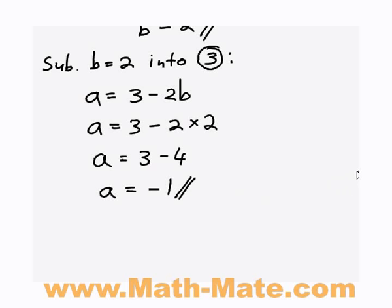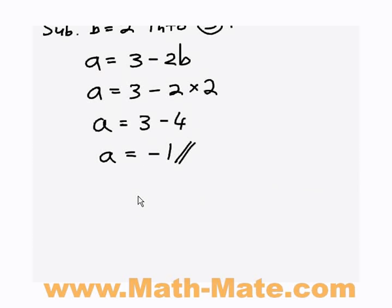So just to summarize our answer for both a and b, we can write that a equals negative 1 and b equals 2. And do a little double line to show it's our answer.